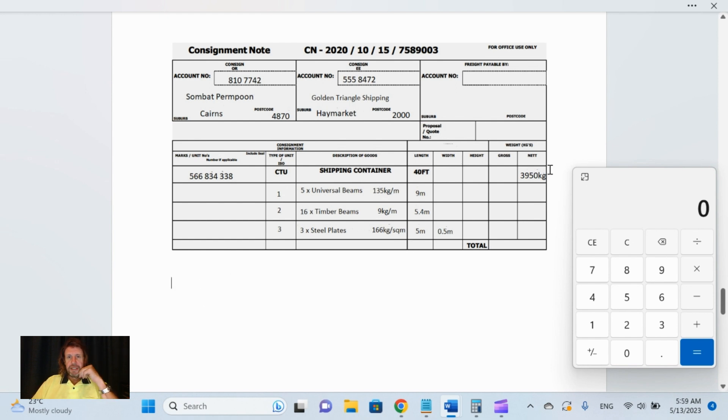We've got a shipping container here. It's asking us what the weight of the consignment load is. What's the total weight here? We've got the shipping container there: 3950 kilos.